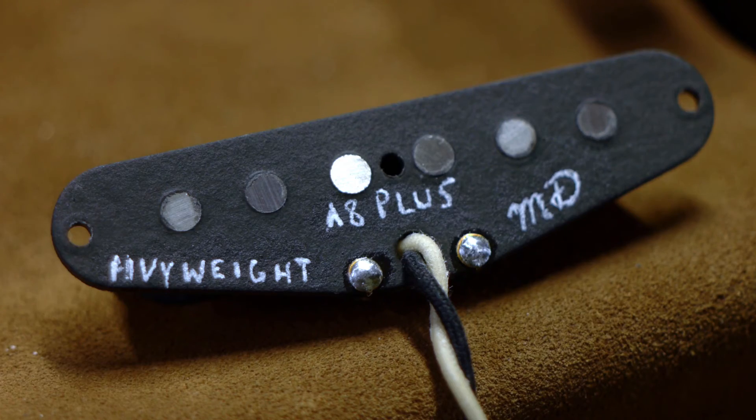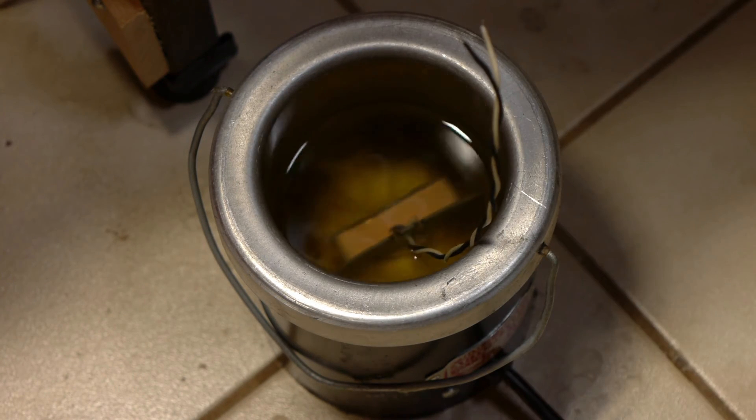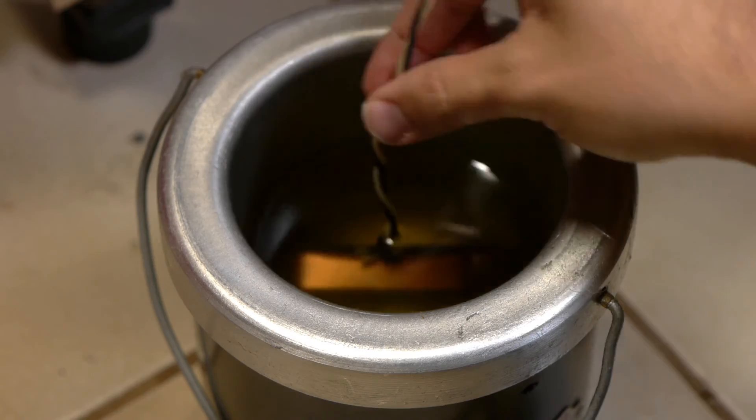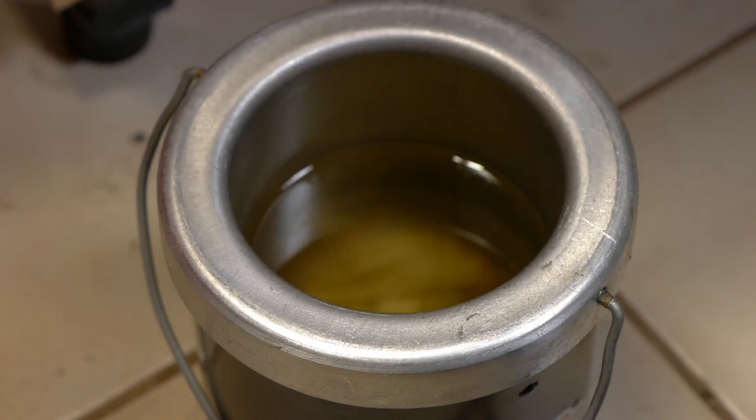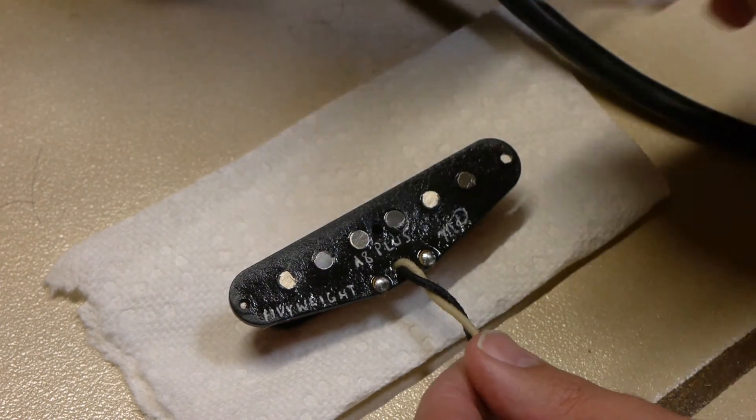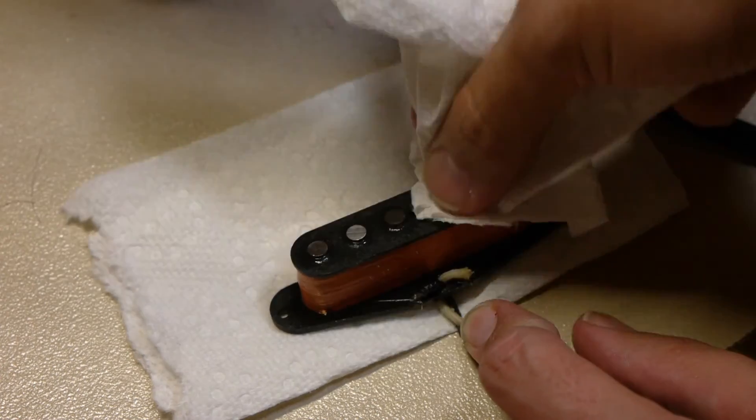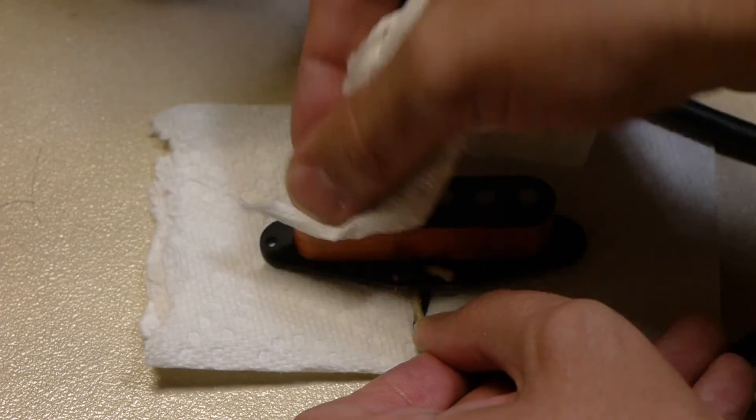Then it's into the wax bath. I use a hot melt glue pot. Some people like potting their pickups less or more. I usually wait until the bubbles stop coming up, or about 5 to 10 minutes. When it's done, I turn the pickup sideways to let the bulk of excess wax drain back into the pot, then place it on a piece of paper towel and use another piece of paper towel to wipe it down. Make sure to move quickly and get all of the liquid wax off to make sure the finished pickup looks as clean and professional as possible.